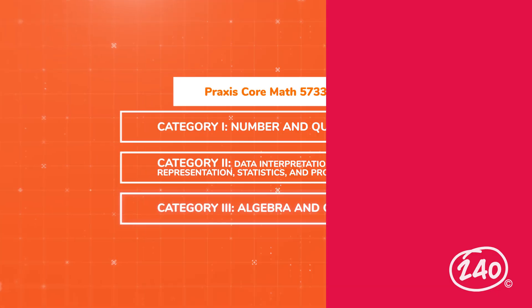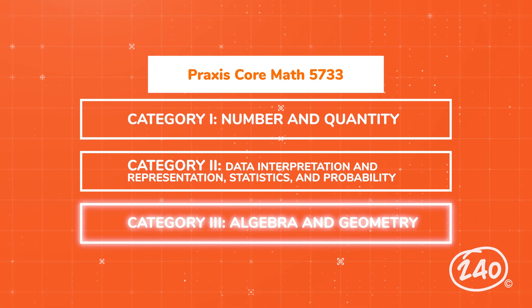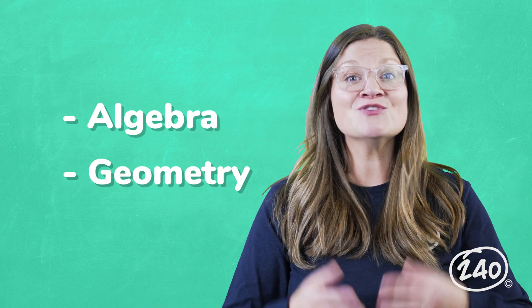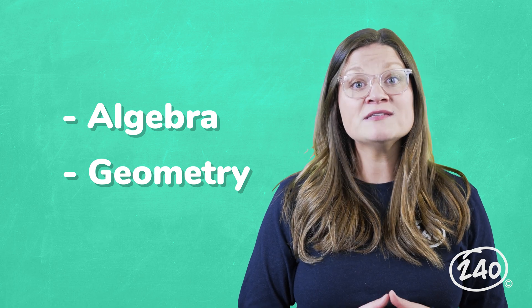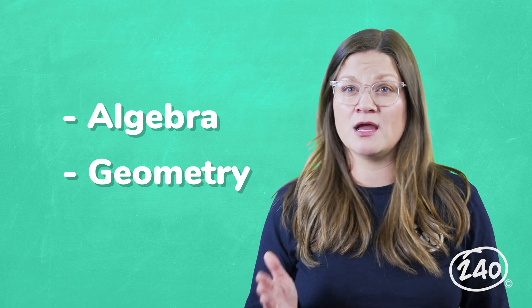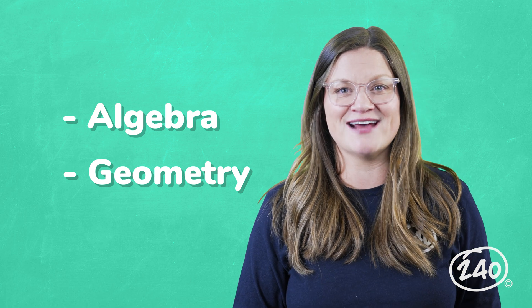Last category on the list is algebra and geometry. Just like the previous category, this one makes up 32% of your exam, or the last 18 questions. This category breaks down into two pretty obvious chunks, algebra and geometry. But each of these chunks still has a ton of information in it. We'll still pick out one super important nugget from each that you're likely to see on your test.